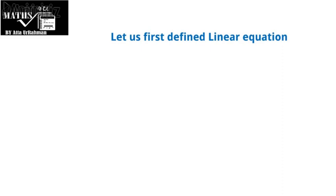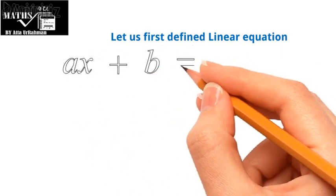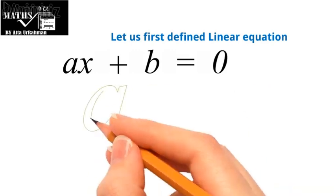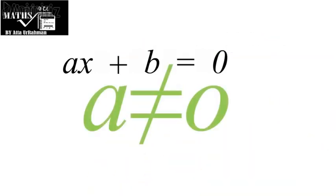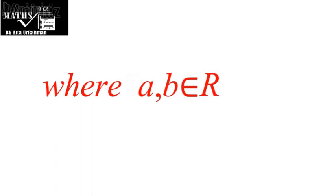A linear equation is an algebraic equation in the form of ax plus b equal to zero, where a is not equal to zero, and a and b involved here must belong to the set of real numbers.